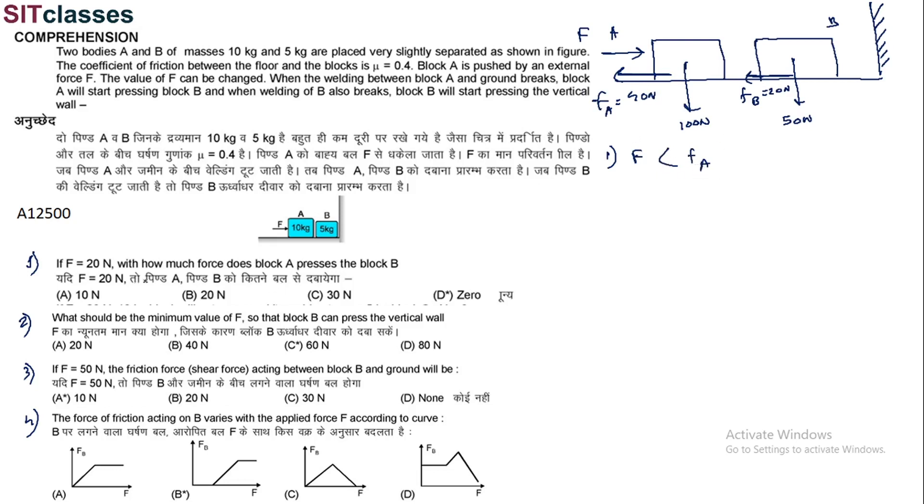What should be the minimum value of F so that B can press the vertical wall? So if you have to press the vertical wall, F should overcome limiting friction value for A and B. So what was the limiting friction value? 40 plus 20, that is equal to 60 N.